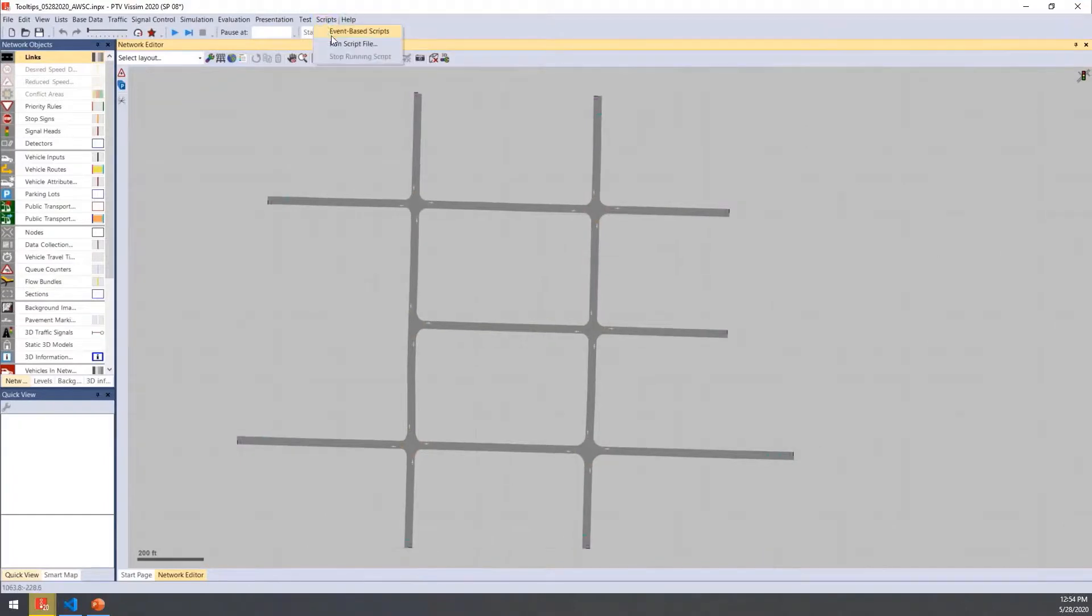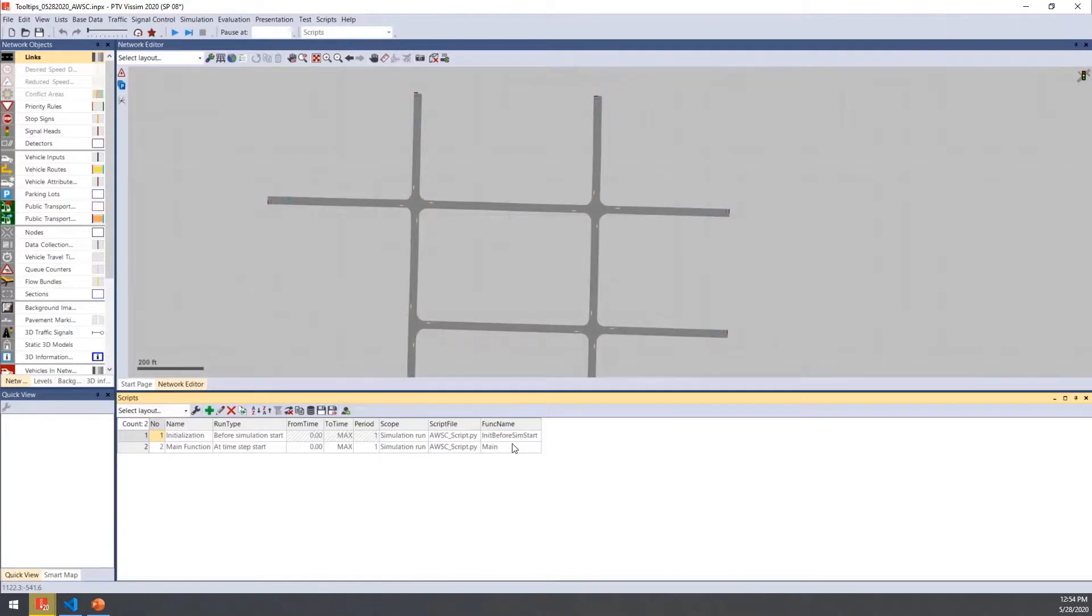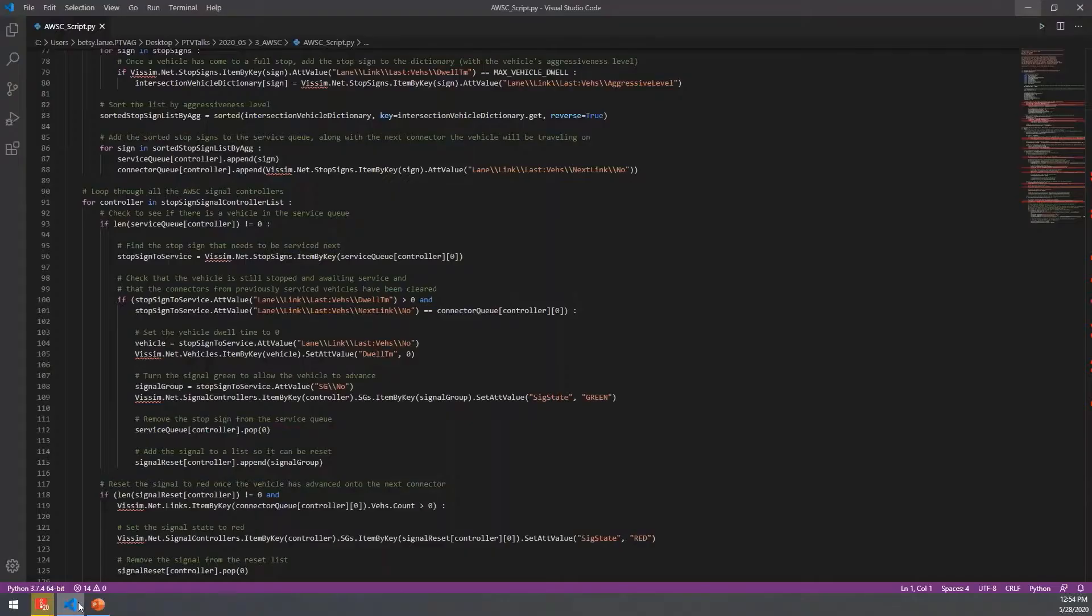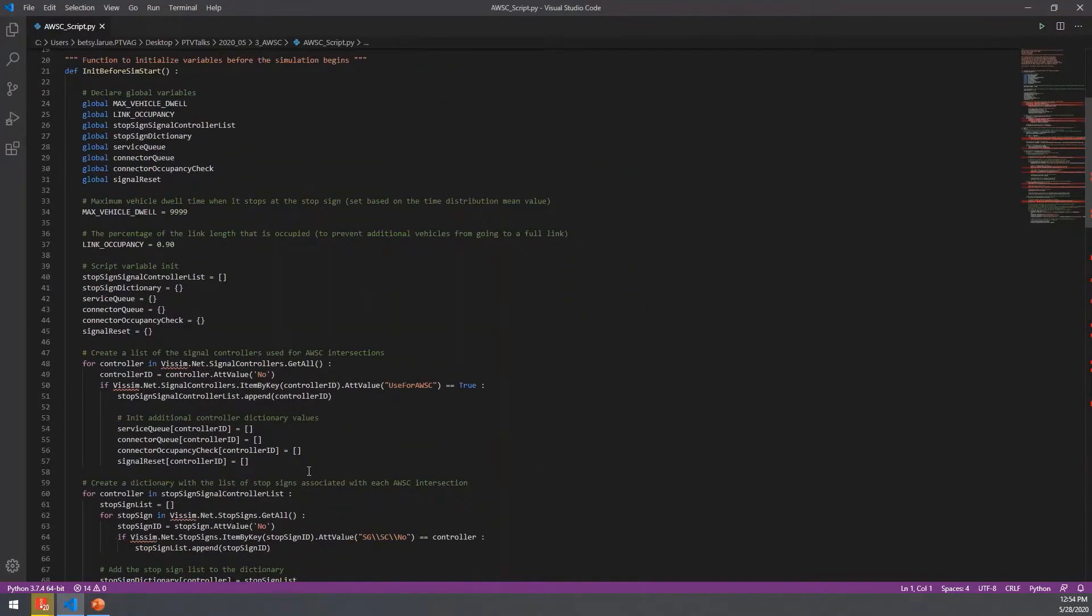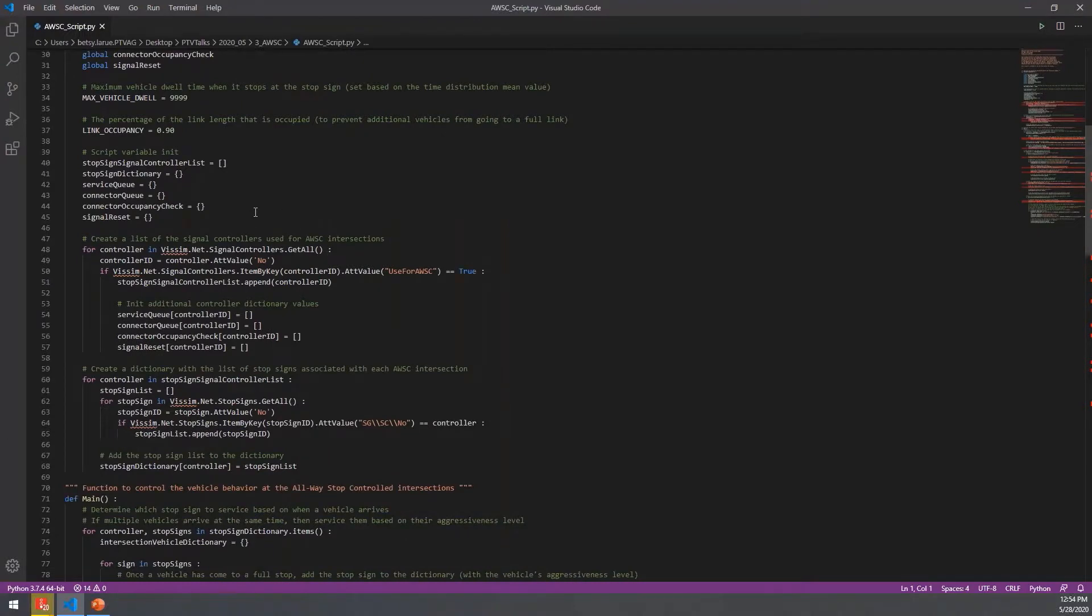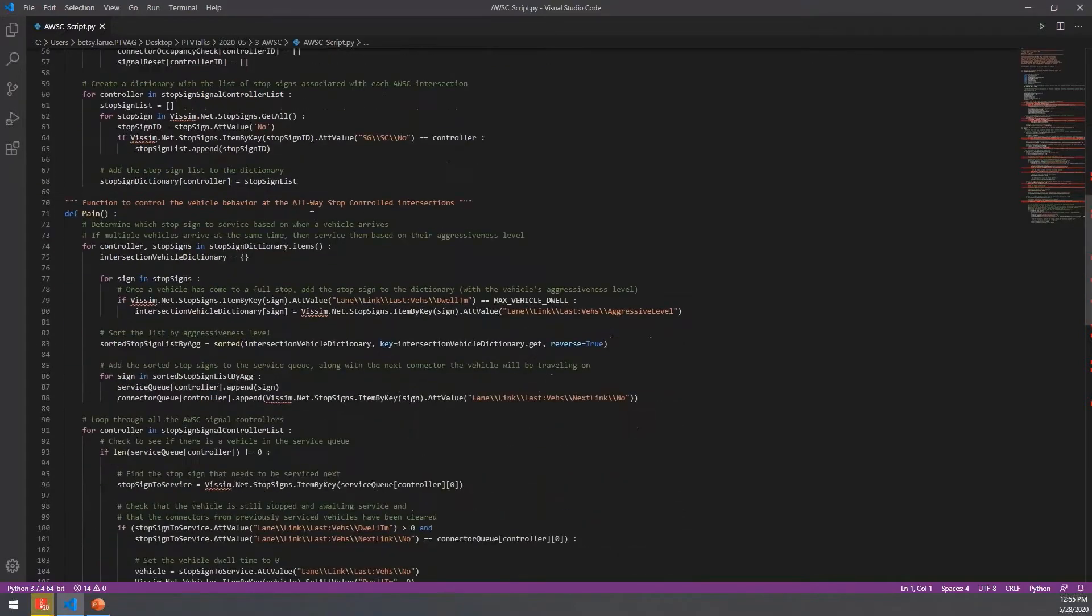In the Scripts tab under Event-Based Scripts, is where we're going to call this Python script. So it's going to have two different functions there. It's going to first run this initialization, which is going to get a list of all of the signal controllers that are used and group all those stop signs together to that signal controller, so that way we can create our own intersection with all of its data.